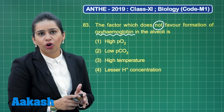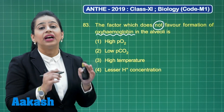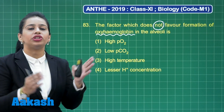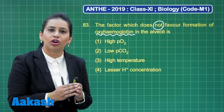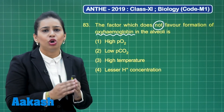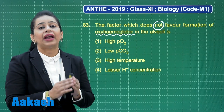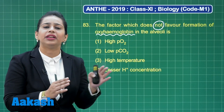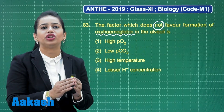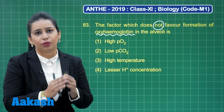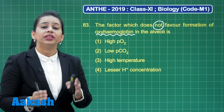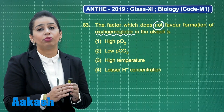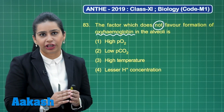The formation of oxyhemoglobin is favored by high partial pressure of oxygen, low partial pressure of carbon dioxide, low body temperature, and less concentration of hydrogen ions, as well as less concentration of BPG or DPG — that is bisphosphoglycerate. The exactly opposite factors promote the dissociation of oxyhemoglobin.